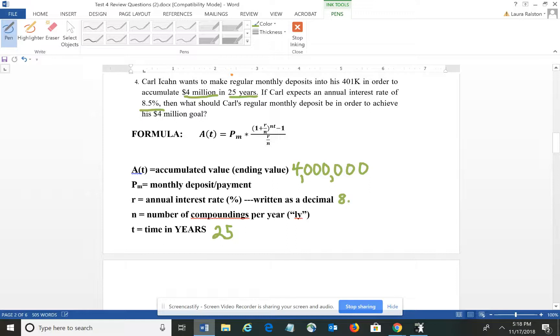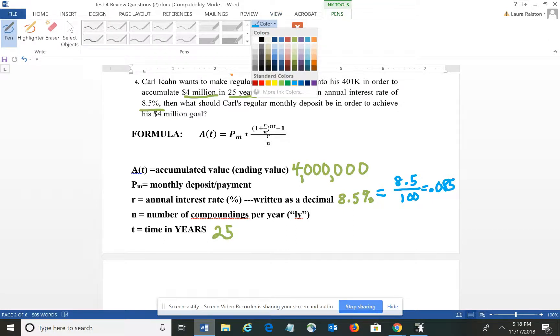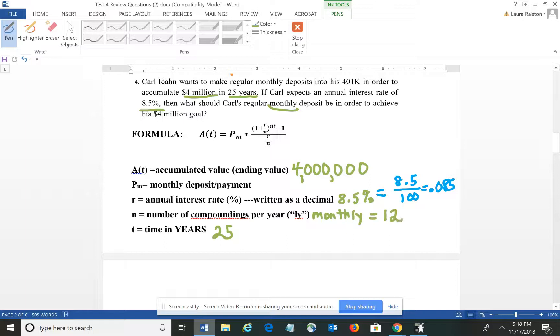So my interest rate is 8.5 percent. Now remember, that needs to be converted to a decimal. To convert any percent to a decimal, you do the decimal value divided by 100, which would be .085. Continuing that discussion, then it says Carl wants to make monthly deposits. So the number of compoundings per year is monthly, and there happens to be 12 months in a year.